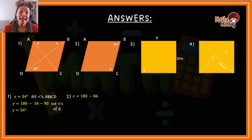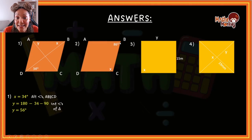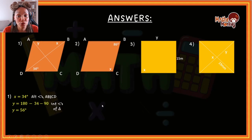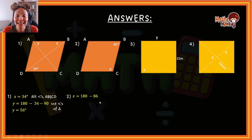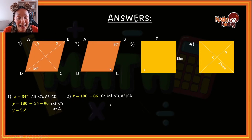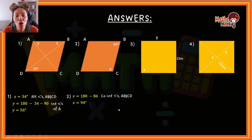Let's try number two. These lines are parallel, and these two angles are co-interior angles, so they must add up to 180. To find x: 180 minus 86. Reason: co-interior angles, AB parallel to CD. If you are struggling with co-interior and alternate angles, I do have a video on this called parallel lines — please go and have a look at it. So the answer for x is 94 degrees. That's all we needed for number two.